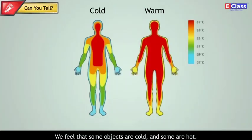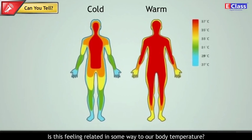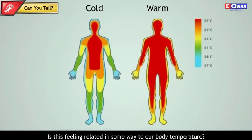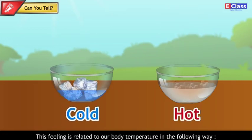Can you tell? We feel that some objects are cold and some are hot. Is this feeling related in some way to our body temperature? Answer: We feel that some objects are cold and some are hot. This feeling is related to our body temperature in the following way.